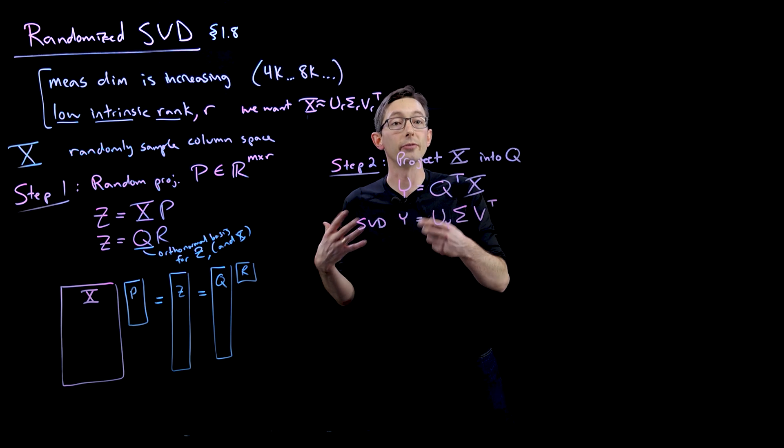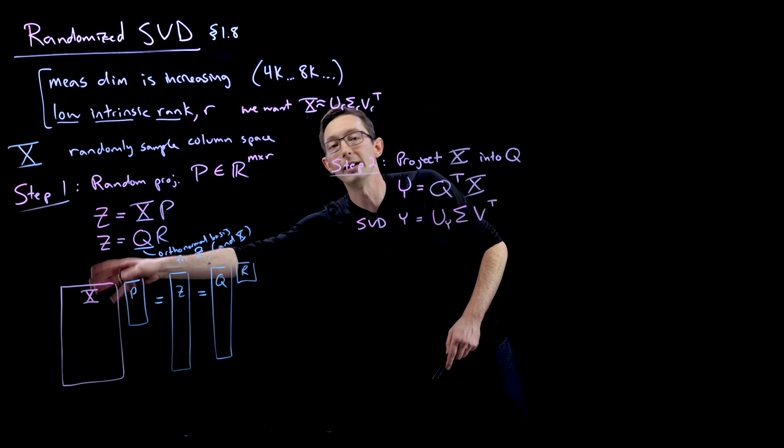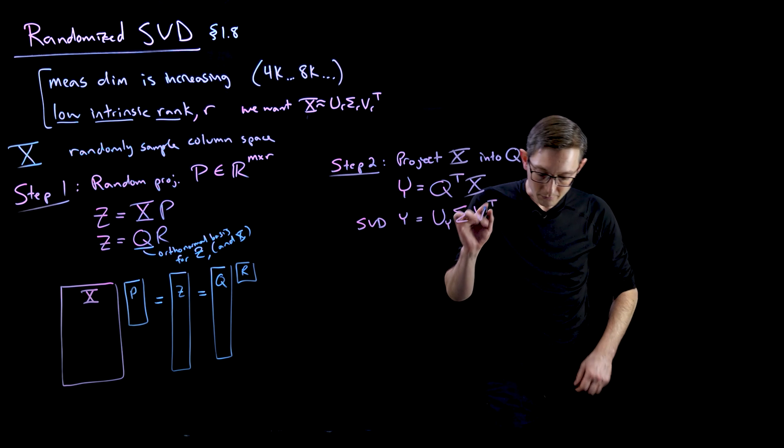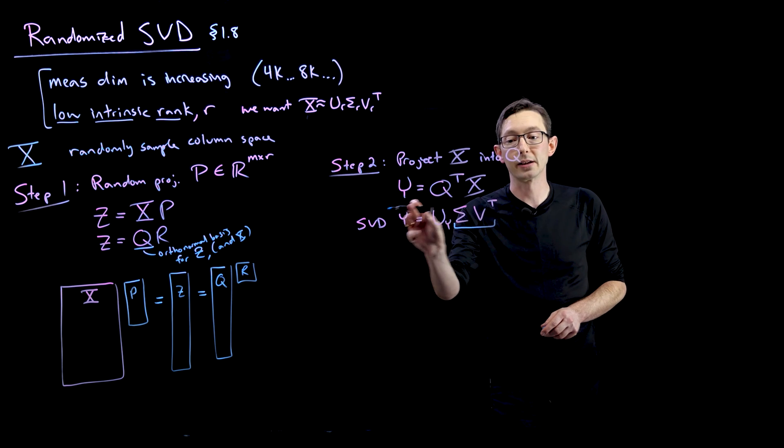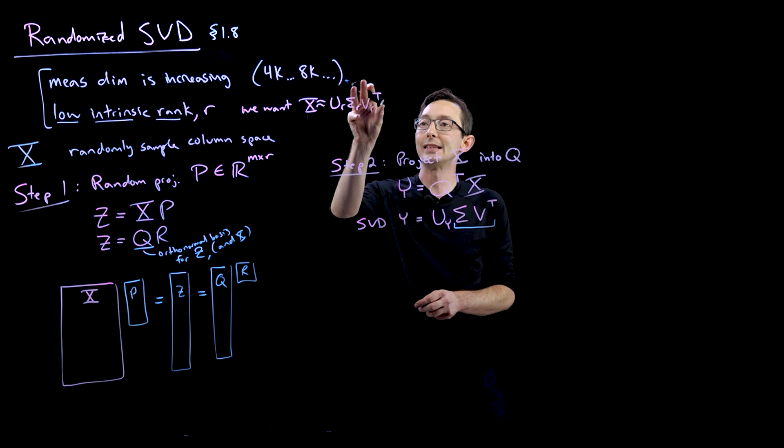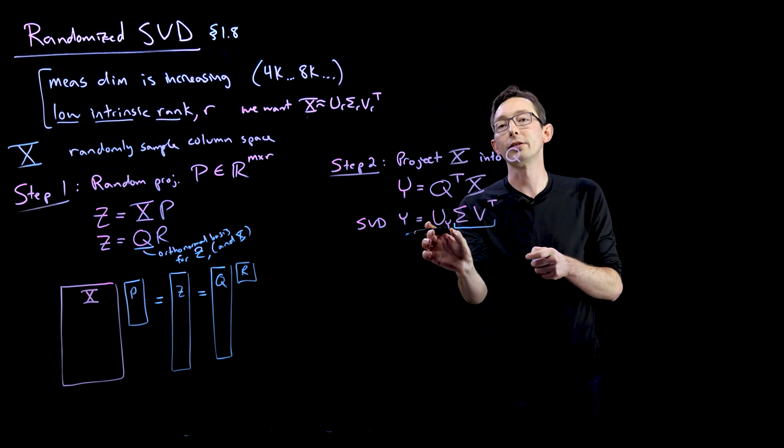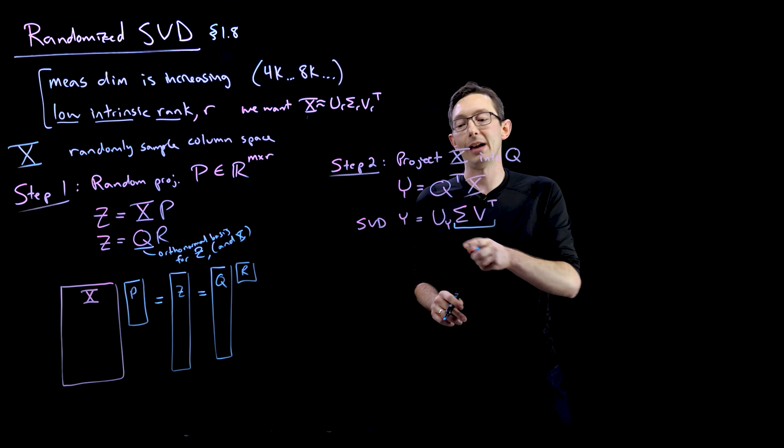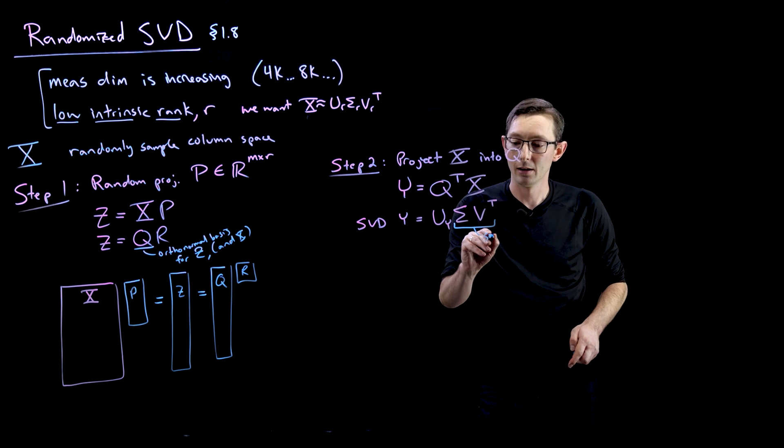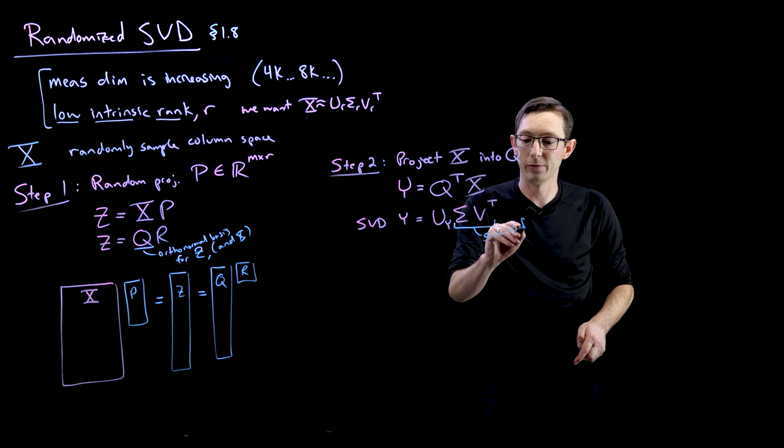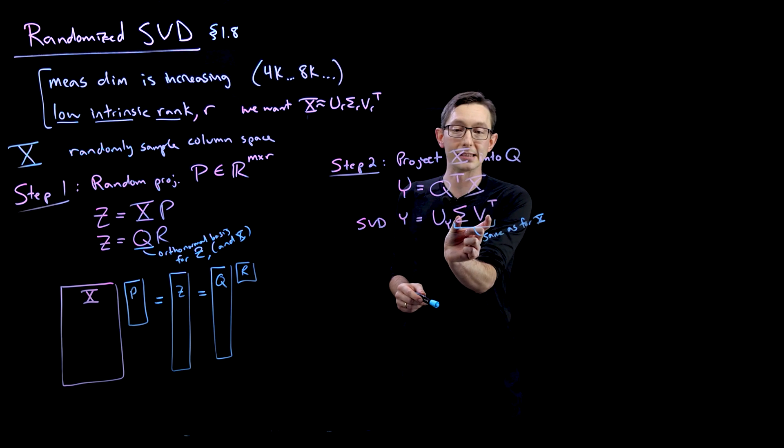But here's the catch. Again, and this requires some proof that I'm not going to go into here. But based on the properties of random matrix theory and structured matrices X, the sigma and the V of this small Y matrix should be the same as the sigma and the V of my high dimensional X matrix. Because this U is an orthonormal basis that spans the columns of X, then this sigma and V will be the same as for X. That's a key, key property.